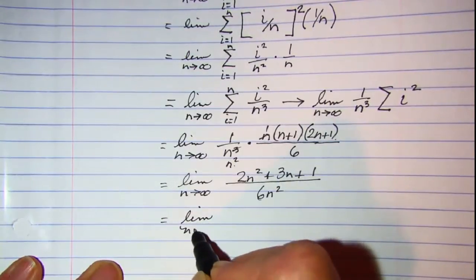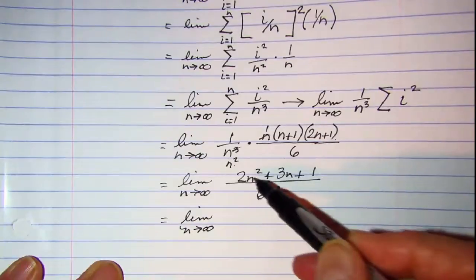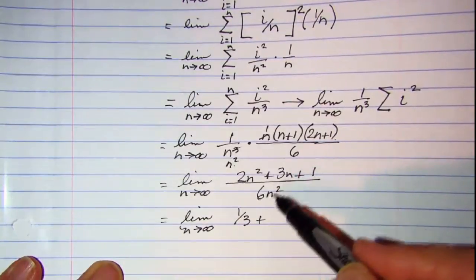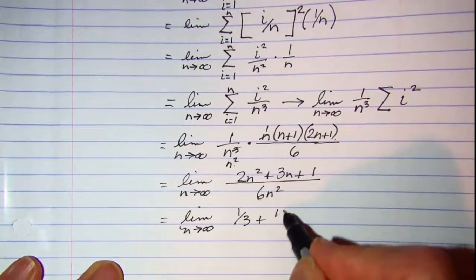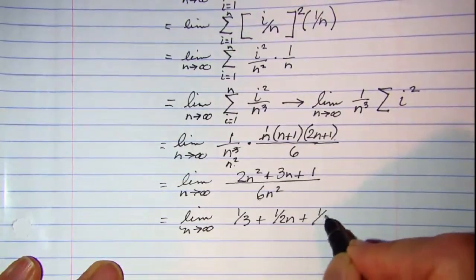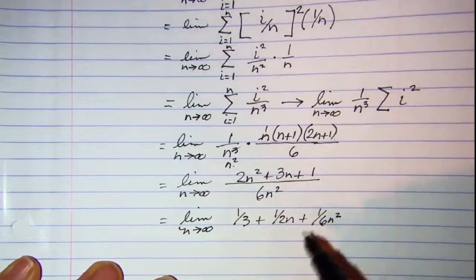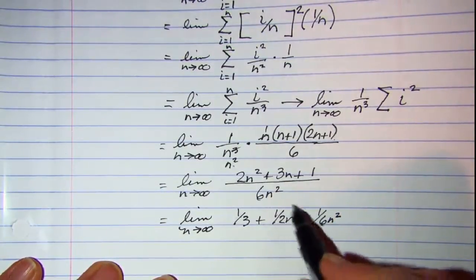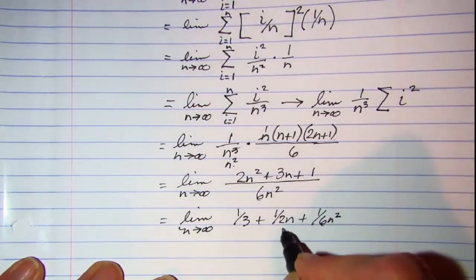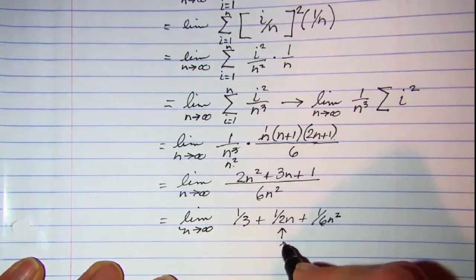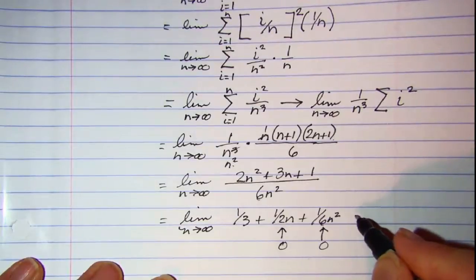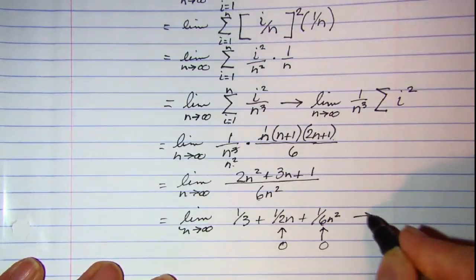Let's separate these into 3 fractions and then find the limit. So 2n squared over 6n squared is 1 third. 3n over 6n squared is 1 over 2n, and 1 over 6n squared won't simplify. And we know that when we take the limit of a fraction, if the variable is in the denominator as that approaches infinity, the whole fraction is going to go towards 0. So this one and this one both go towards 0. So my area of my region is 1 third.